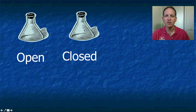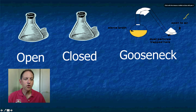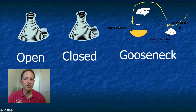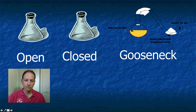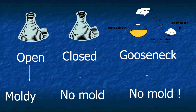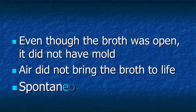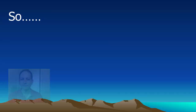Pasteur's second vial he closed up tight after boiling his chicken broth. The third one — this is his true genius — he came up with a gooseneck tube so that air could come into the tube and keep touching the chicken broth. It was open to air, but dust particles would get trapped in the curve. The first one, left open, was moldy. The second, closed tight — no mold. The third — no mold growing, proving that air could touch something and yet it would not come to life, disproving spontaneous generation once and for all.